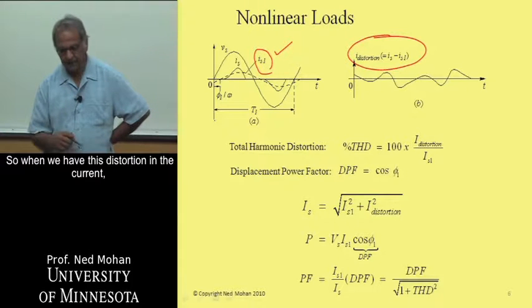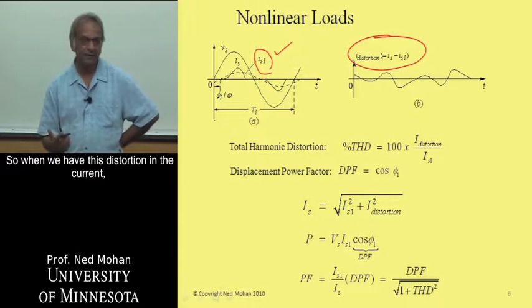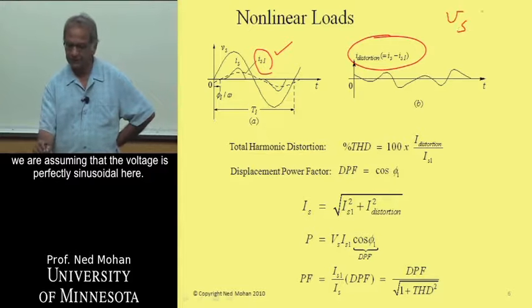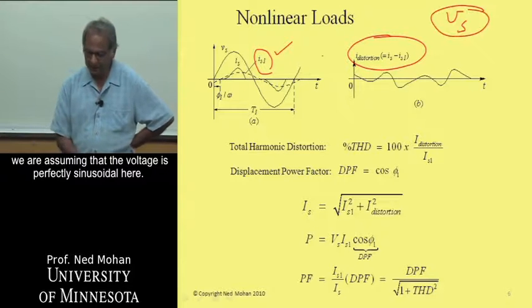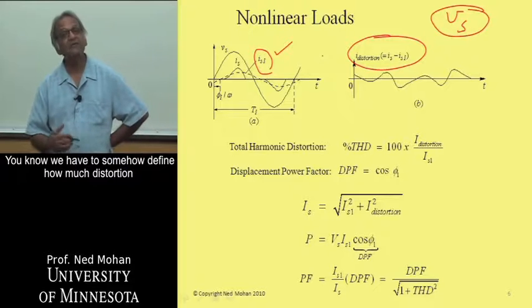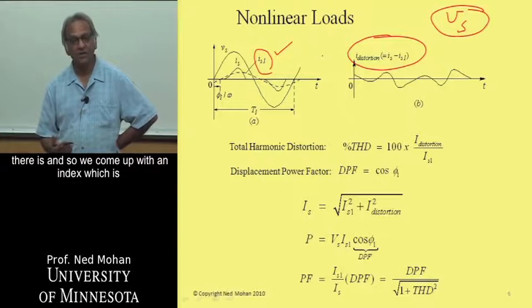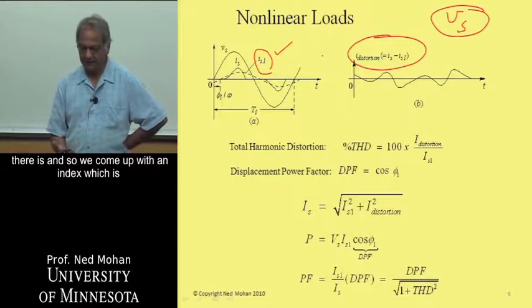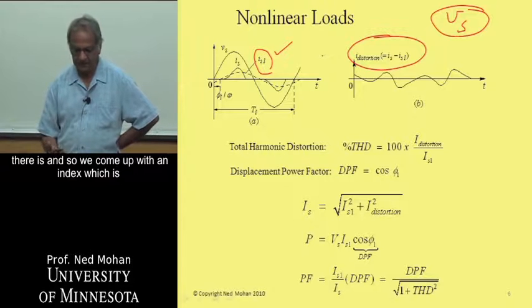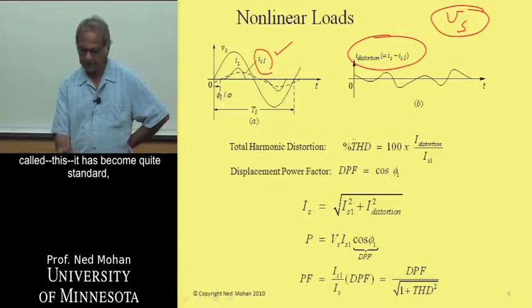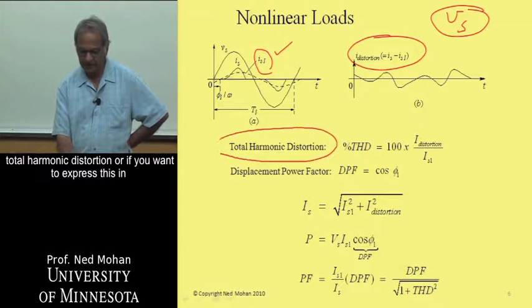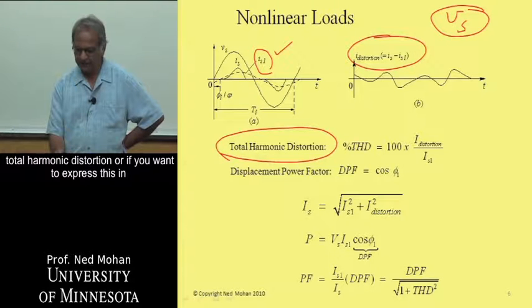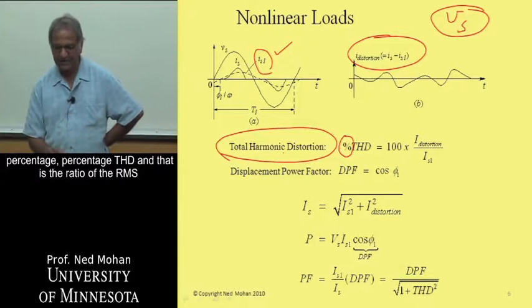So when we have this distortion in the current, we are assuming that the voltage is perfectly sinusoidal here. We have to somehow define how much distortion there is. And so we come up with an index, which is called—it has become quite standard—total harmonic distortion. If you want to express this in percentage, percentage THD.